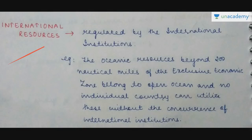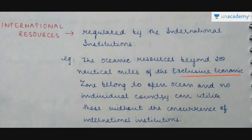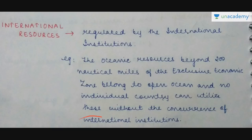International resources are mainly regulated by international institutions. For example, oceanic resources beyond 200 nautical miles of the exclusive economic zone belong to the open ocean, and no individual country can utilize these resources without the concurrence of international institutions.